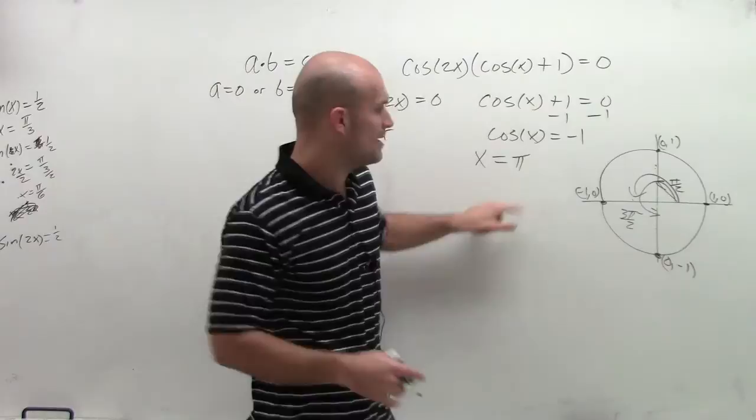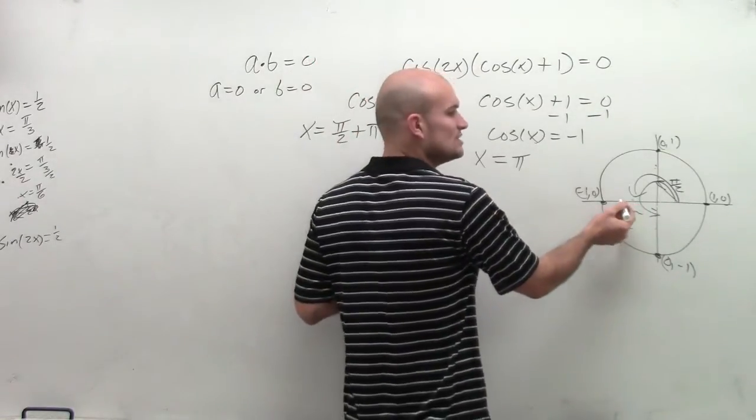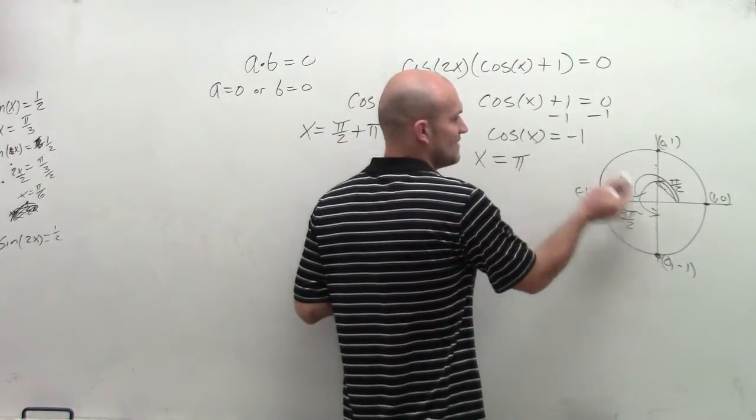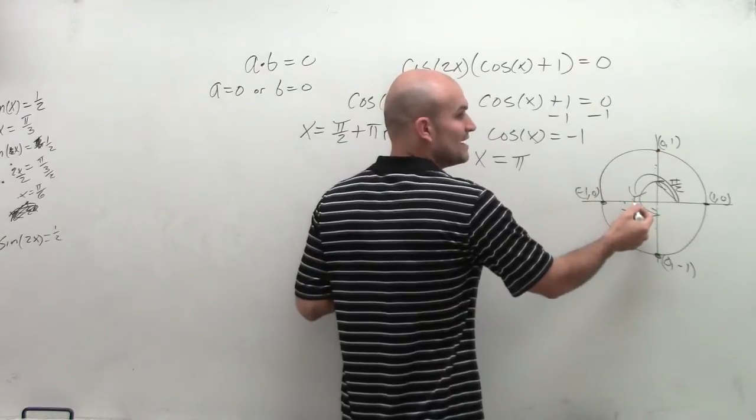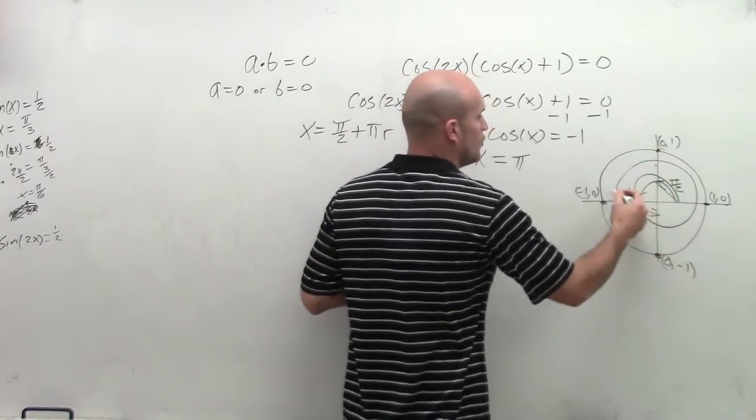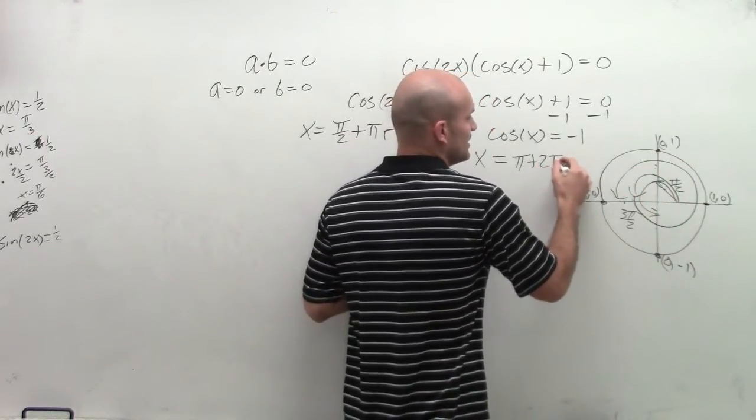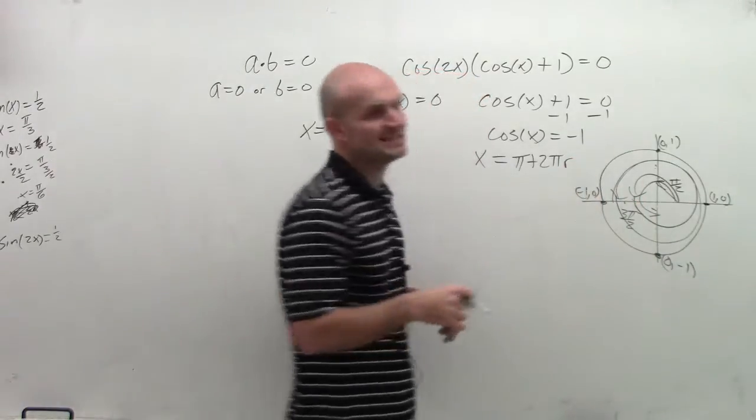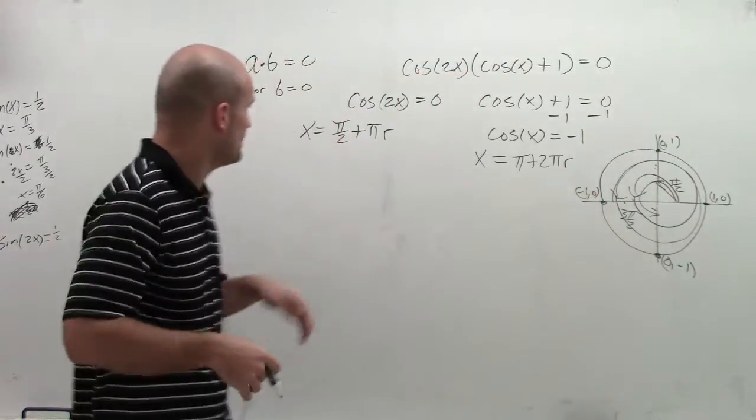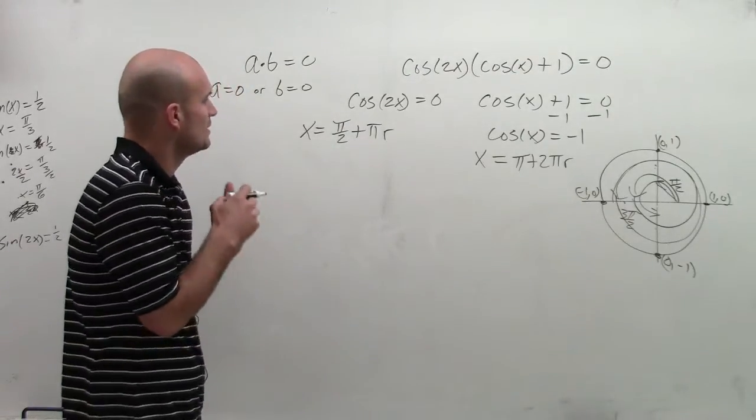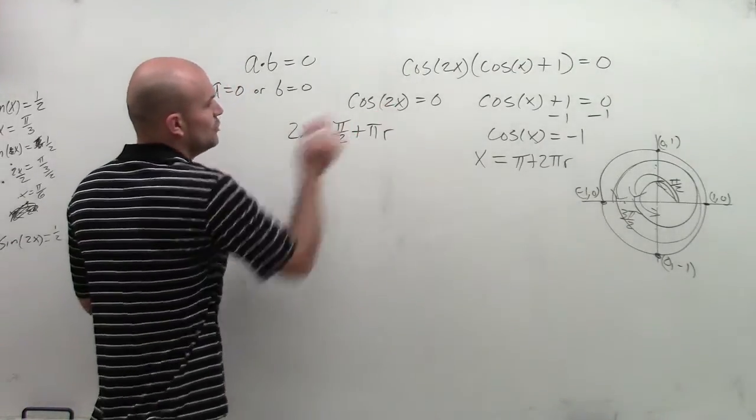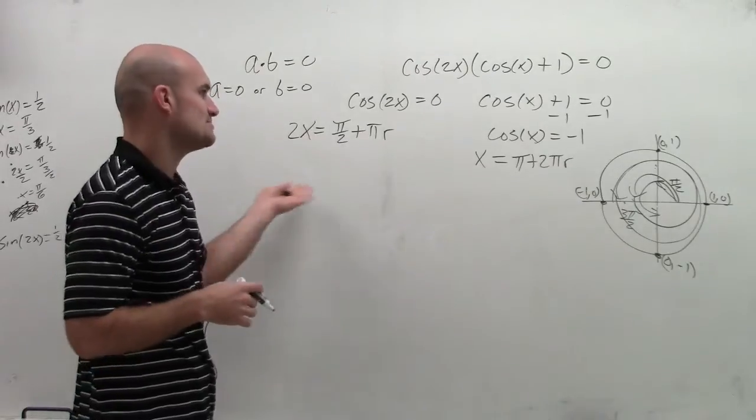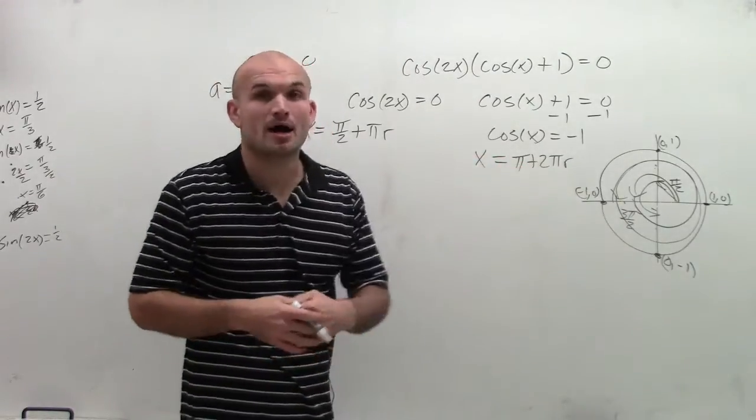Now I look at x equals pi, but this is the only solution where my cosine of x equals negative 1. So to keep on finding more solutions, I'm going to need to add a full revolution, which is going to be the 2 pi. And then I can keep on doing that r many times. So therefore, I have 2x equals pi halves plus pi times r, and x equals pi plus 2 pi r.